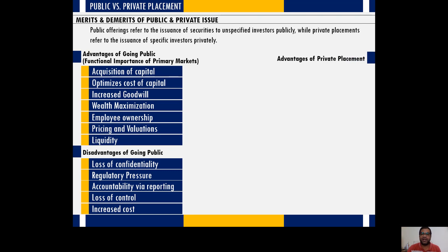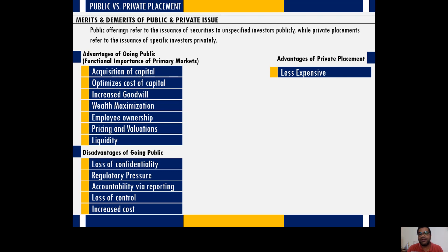The disadvantages of public issue become the advantages of private placement. Private placement is less expensive because you're signing the deal with a limited number of players, so you don't have to spend on advertisements, merchant bankers, underwriters, or brokers. The process is also quick and convenient — you avoid filling applications, waiting for SEBI approval, appointing intermediaries, going for advertisements, and printing prospectuses.